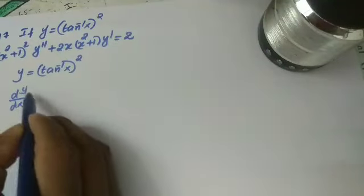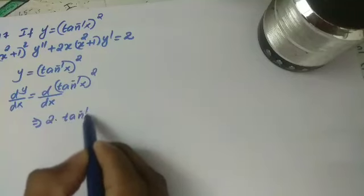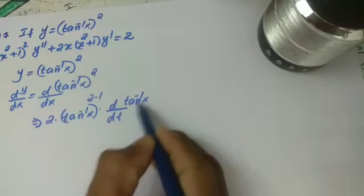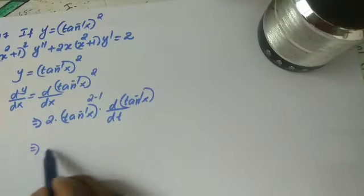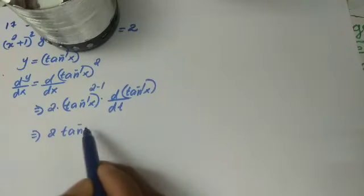Simple question: y equal to tan inverse x all square. So differentiation dy by dx of y equal to dy by dx of tan inverse x all square, which gives 2 into tan inverse x into d by dx of tan inverse x. So dy by dx equal to 2 tan inverse x over 1 plus x square.